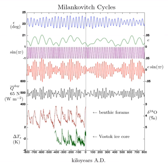More recent work suggests that orbital variations should gradually increase 65 degrees north summer insolation over the next 25,000 years. Earth's orbit will become less eccentric for about the next 100,000 years, so changes should not decline enough to permit a new glacial period in the next 50,000 years.